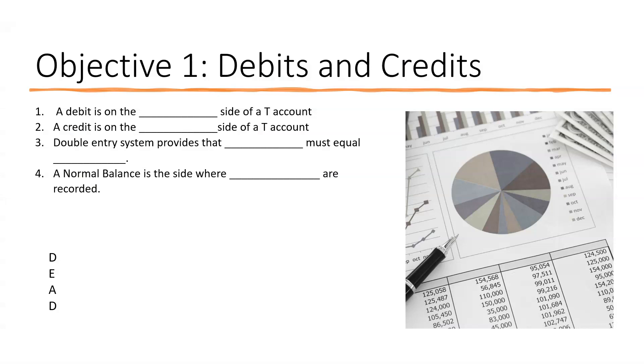So debits and credits — remember in Chapter 2 we're learning about debits and credits, T-accounts, posting journal entries to the ledger, and then creating the trial balance.